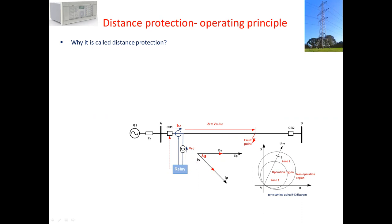To understand how the distance relay is configured or works, we need to understand why it is called distance protection in the first instance. One of the reasons is because the impedance of the transmission line is directly proportional to its length. When the line length increases, the impedance of the transmission line increases as well. That's the reason why it's called distance protection.